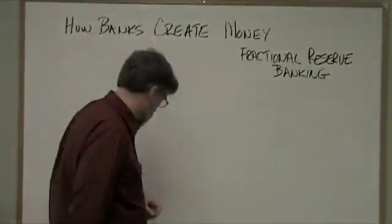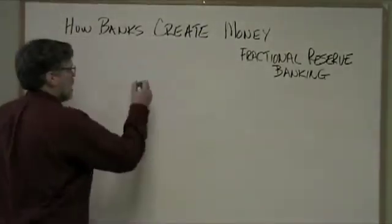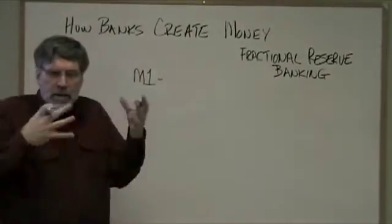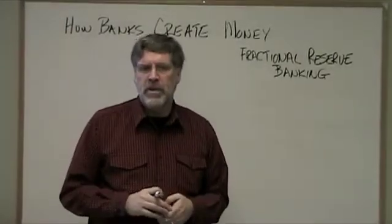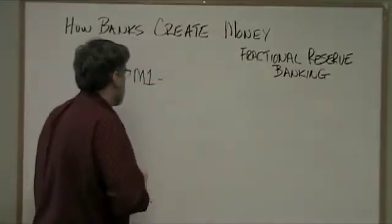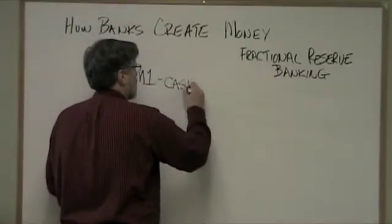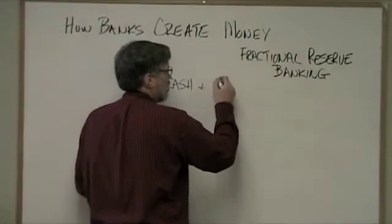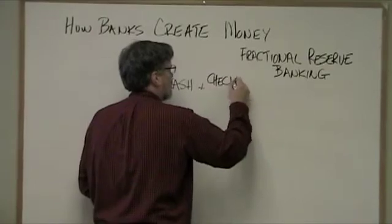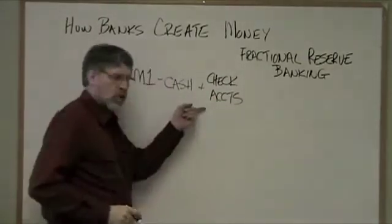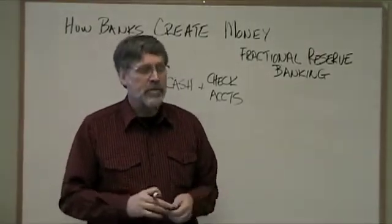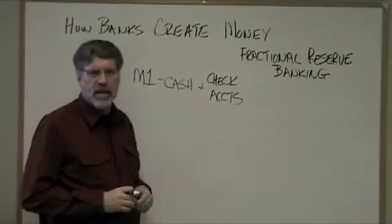Let's first talk about M1 and M2. These are measures that policymakers use to define — really to estimate — how much money is in circulation. M1 is the most restrictive definition, and it typically represents cash, plus what they call demand deposits — we'll just call them checking accounts. In the old days we also used to throw in traveler's checks, but there aren't many of those left anymore. So let's just call M1 cash plus checking accounts.